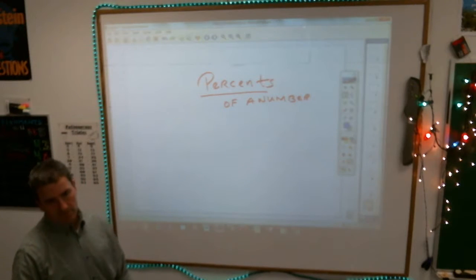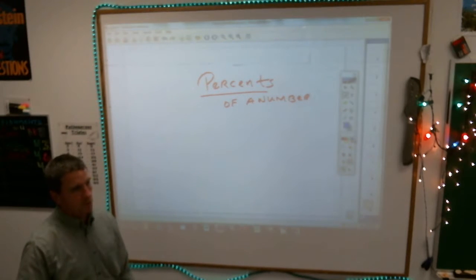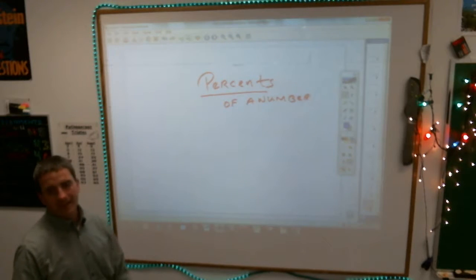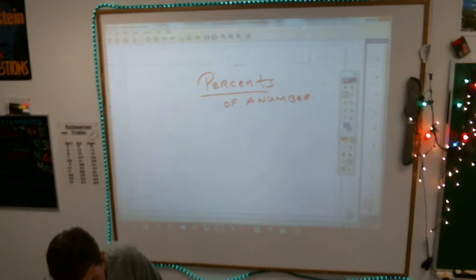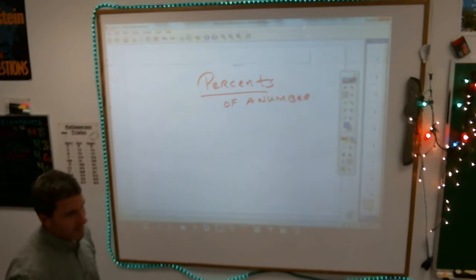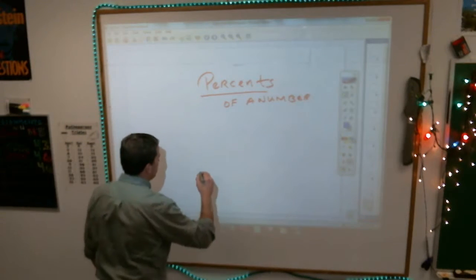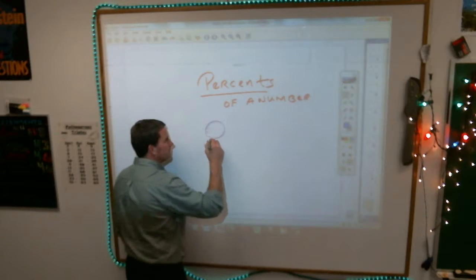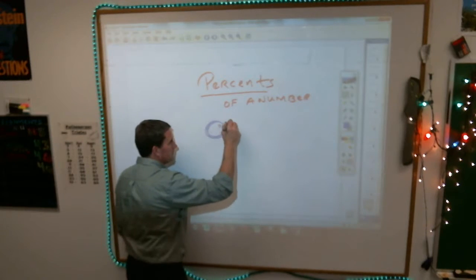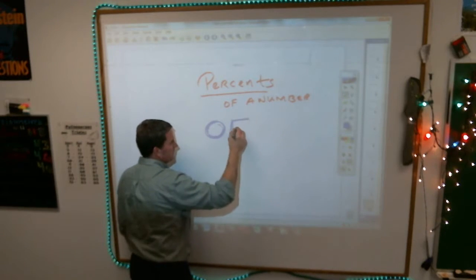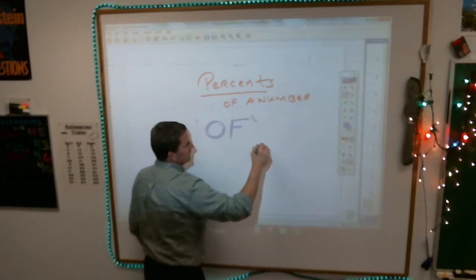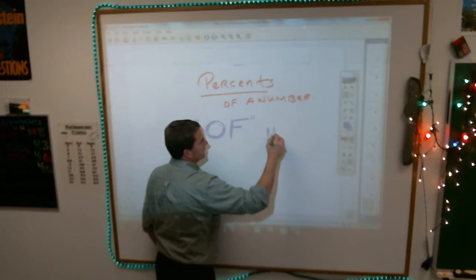when you do that, because people come and serve you, you're supposed to give them what's called a tip. And a tip is supposed to be a percentage of your total bill. And what that means is when you see that word of, get in your minds that of means you multiply.